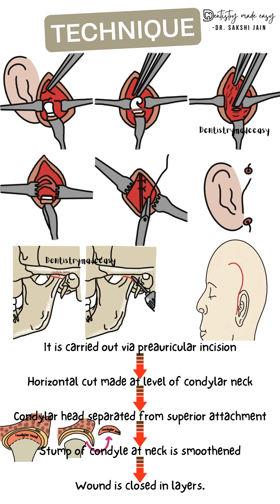Next, a horizontal cut is made with a surgical burr at the level of the condylar neck, preserving the vital structures on the medial side using special retractors. The condylar head is carefully separated from the ramus and from the superior attachment. Since this superior attachment is not firm, the entire head of the condyle is detached, removed, and the fibrous adhesions are broken.